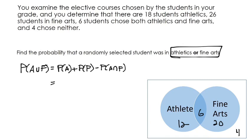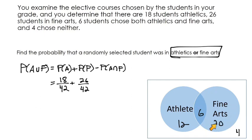The probability of A is 18 out of 42, because there are 18 athletes out of 42 total. The probability of fine arts is 26 out of 42. But those 6 students in both categories got counted in each, so we subtract: minus 6 out of 42 to avoid double counting. That gives us 38 out of 42, which simplifies to 19 out of 21 — roughly a 90% chance. About 90% of students are in one of those two electives.